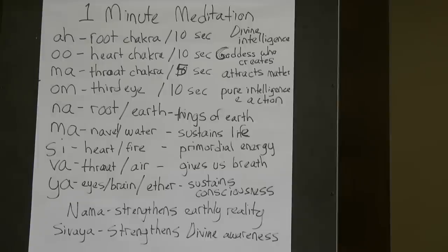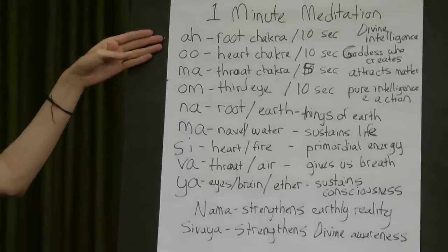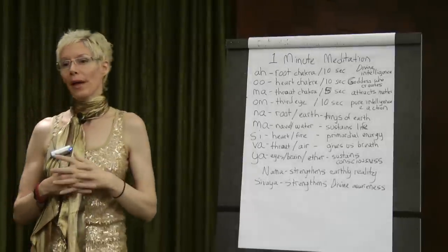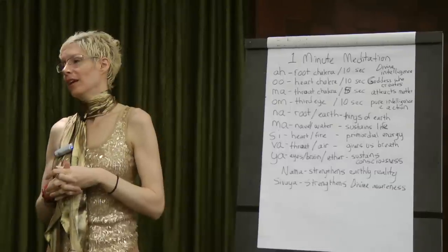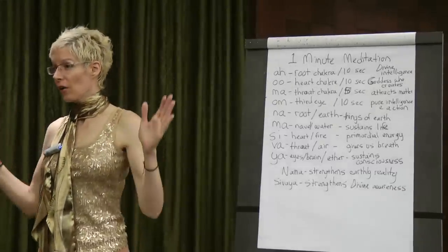Baba calls this an absolute meditation because it uses the sounds which are the basis for the creation of the entire universe. As you can see here, we begin with A, U, and Ma. A, U, and Ma are the components of Om, and Om is the sum totality of all creation.